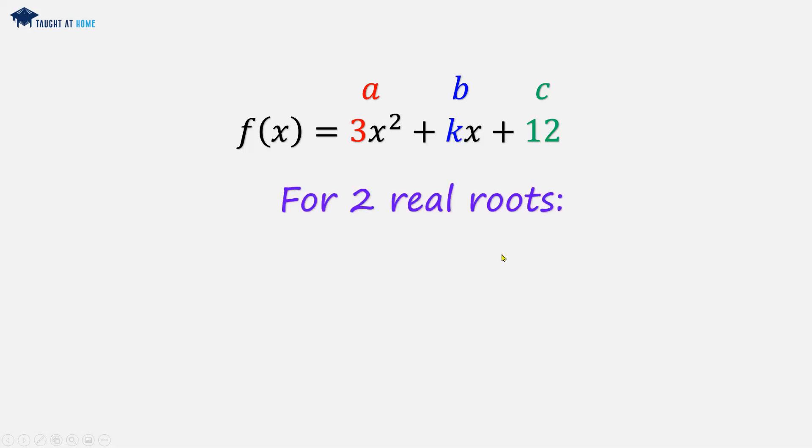Now for two real roots, the condition is b² - 4ac is greater than zero. So we need to find a value of k that makes this function greater than zero. First, we'll substitute our values in for a, b, and c. We want k² - 144 to be greater than zero.